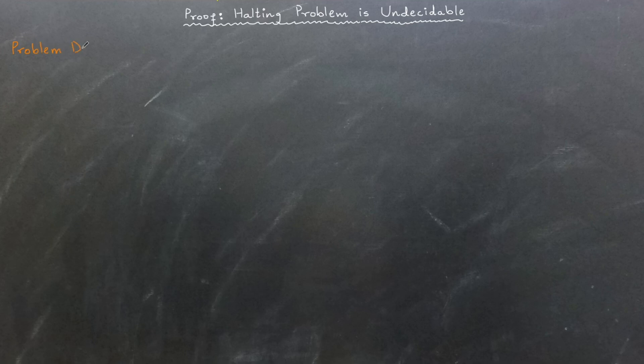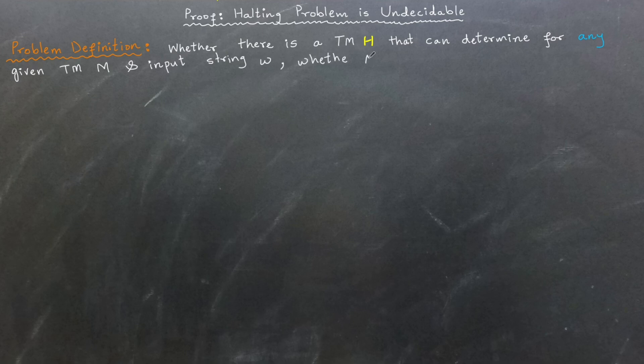Let's start with the problem definition. The halting problem asks whether there exists a Turing machine H that can decide for every possible Turing machine M and input string W whether M will eventually halt, i.e., stop running when executed on input W, or whether it will run forever in an infinite loop.